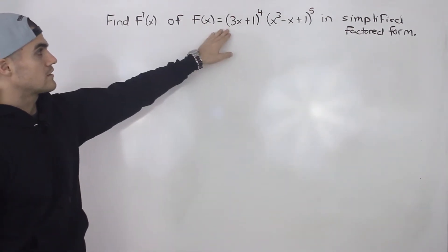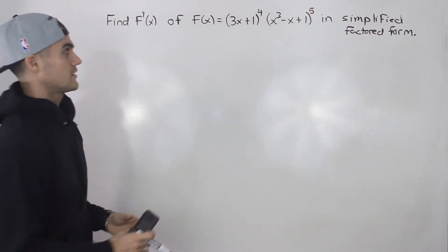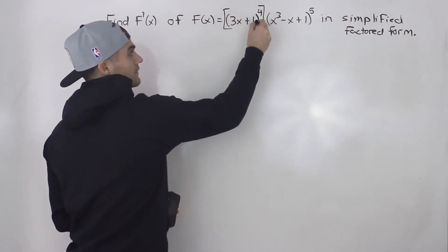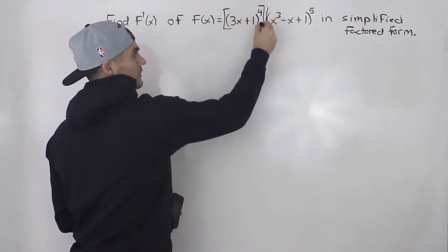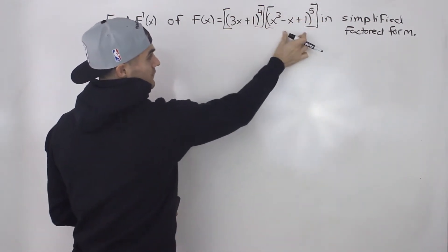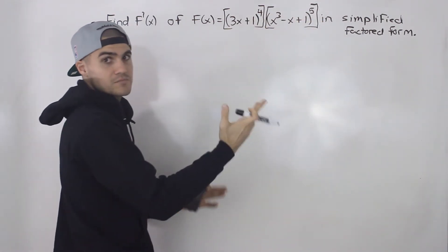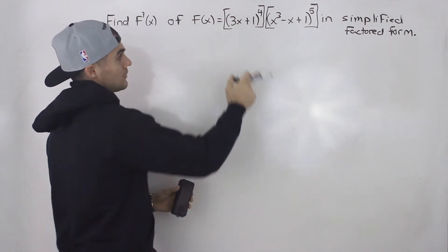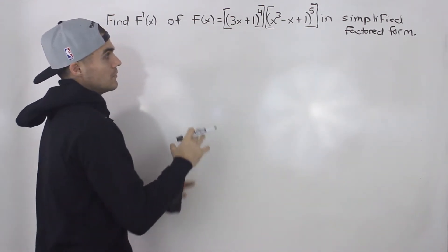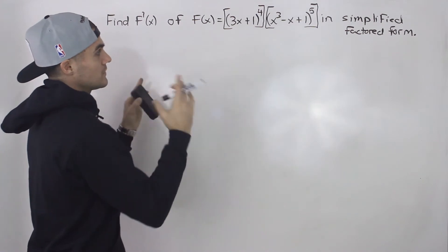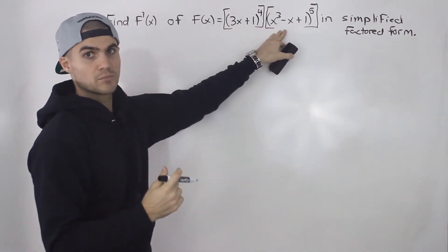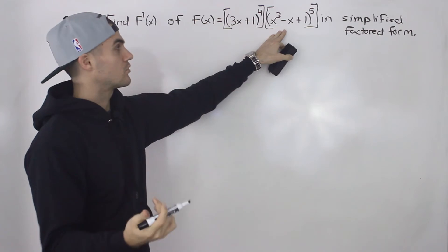The first thing to realize with this function is that it's the product of two functions. Both of these functions are composite functions themselves, so when we take the derivative of each of them, we're going to have to apply the chain rule. But from the outside, since it's two functions multiplied by each other, we first have to apply the product rule.